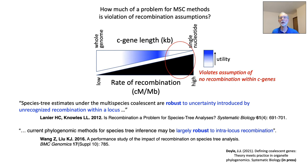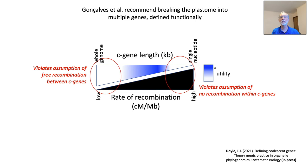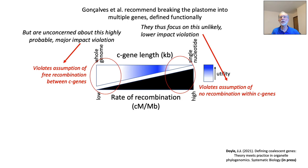How much of a problem is violation of recombination assumptions for MSC methods? Turning first to the too-much-recombination violation, simulations by Lanier and Knowles in 2012 and by Wang and Liu in 2016 suggested that MSC methods are robust to some within-locus recombination. On the other hand, Wang and Liu tested the too-little-recombination assumption and found that this has major consequences on the accuracy of phylogeny reconstruction under the MSC. Gonsalves et al. recommend breaking the plastome into multiple genes, putative C genes, but defined functionally — NDHF, RBCL, etc. They thus focus on this unlikely and lower-impact risk, but are unconcerned about this highly probable major-impact risk.